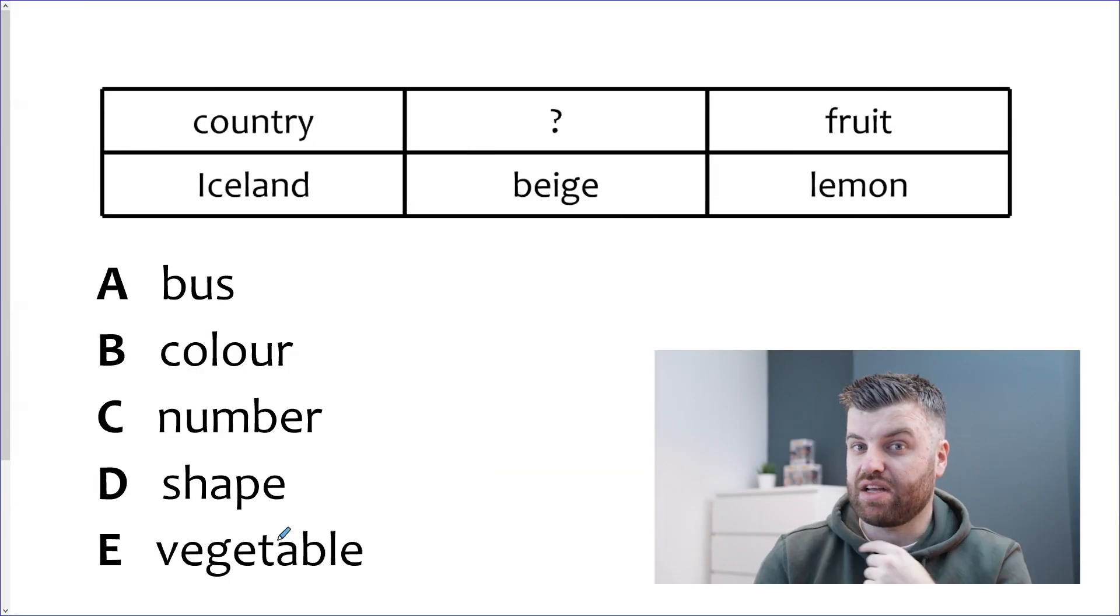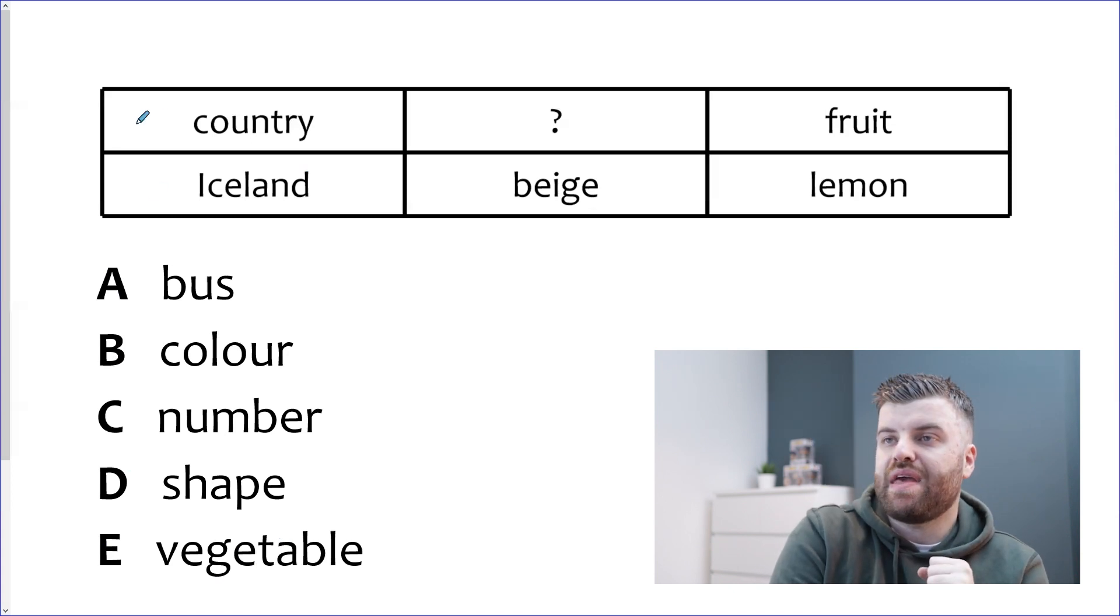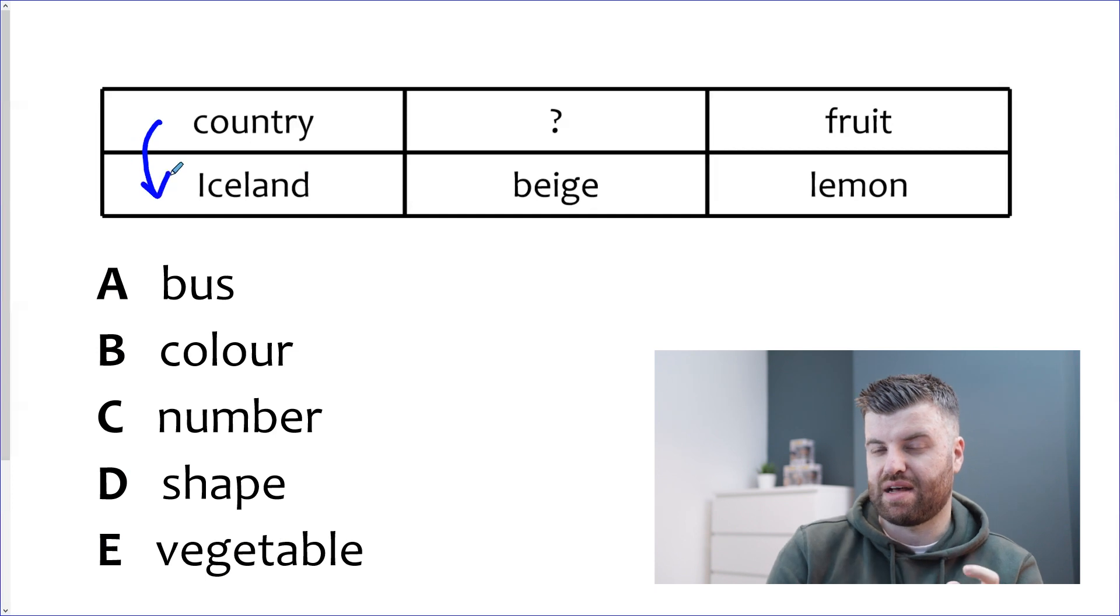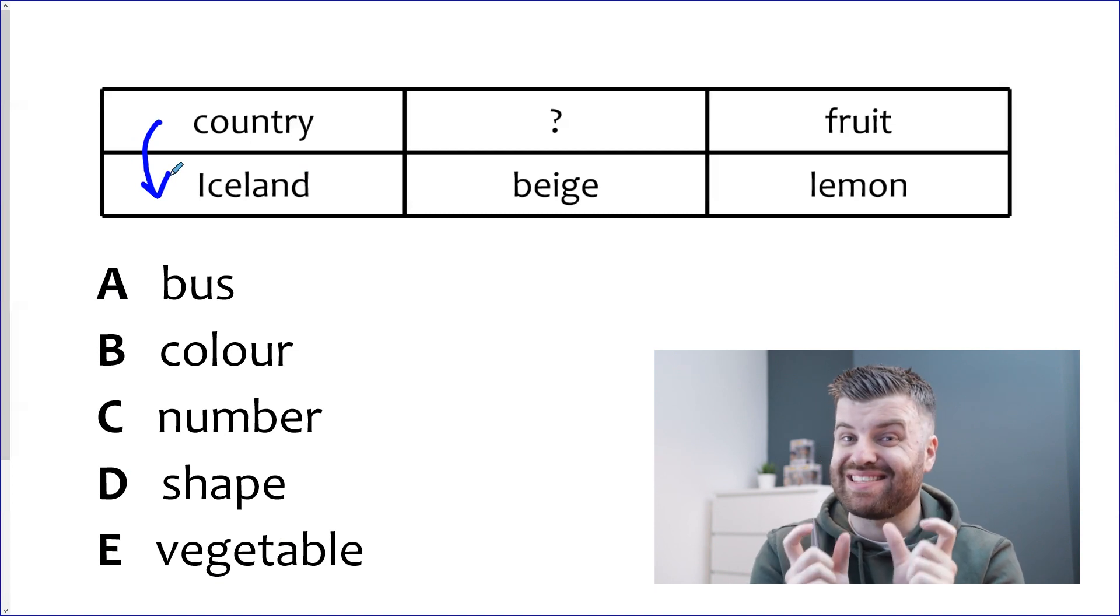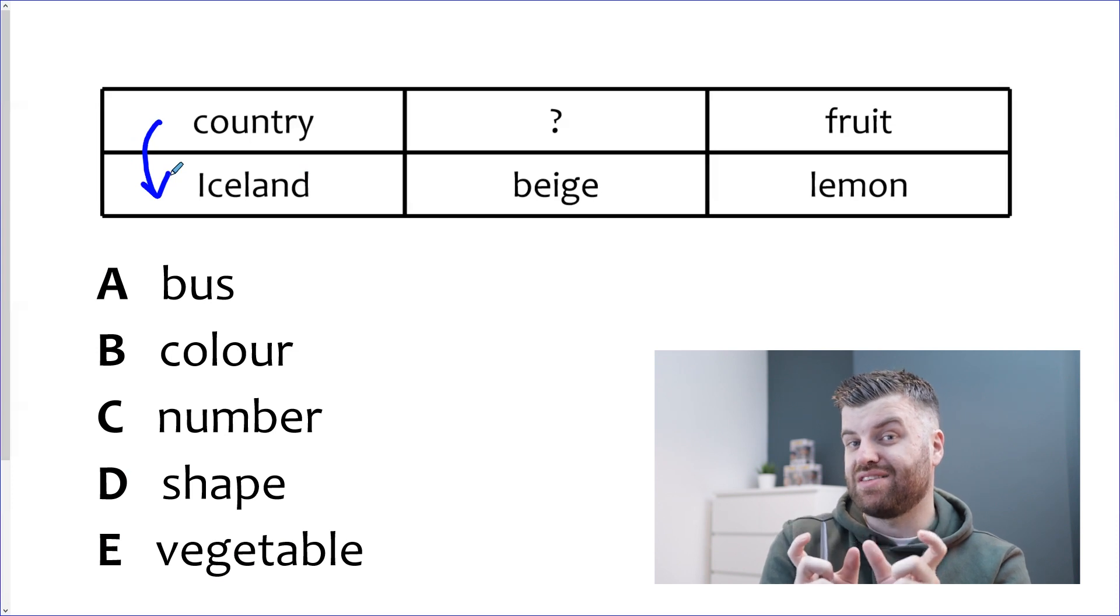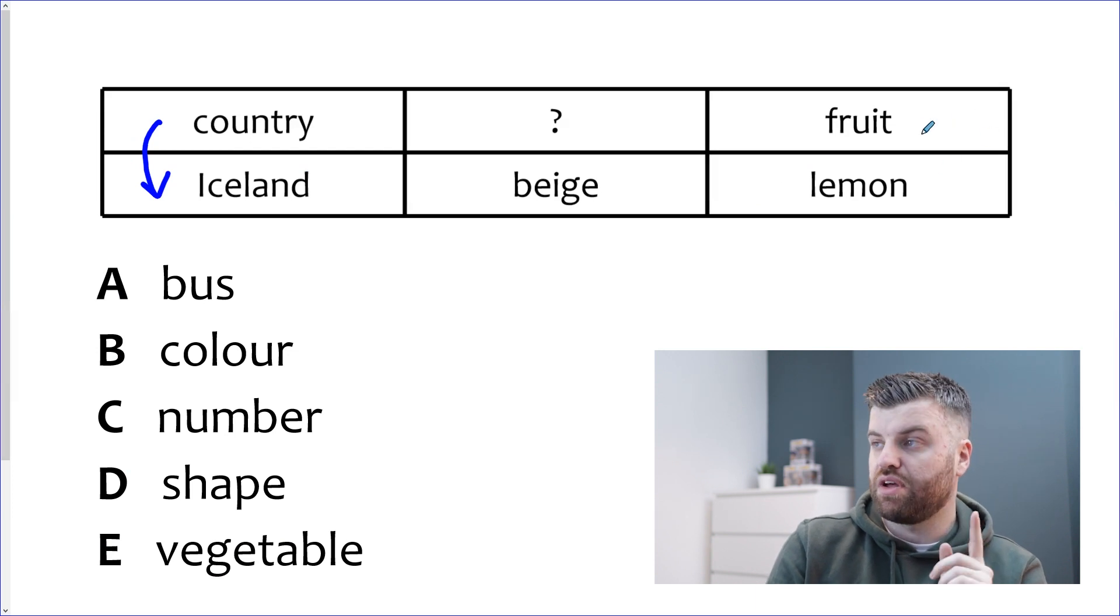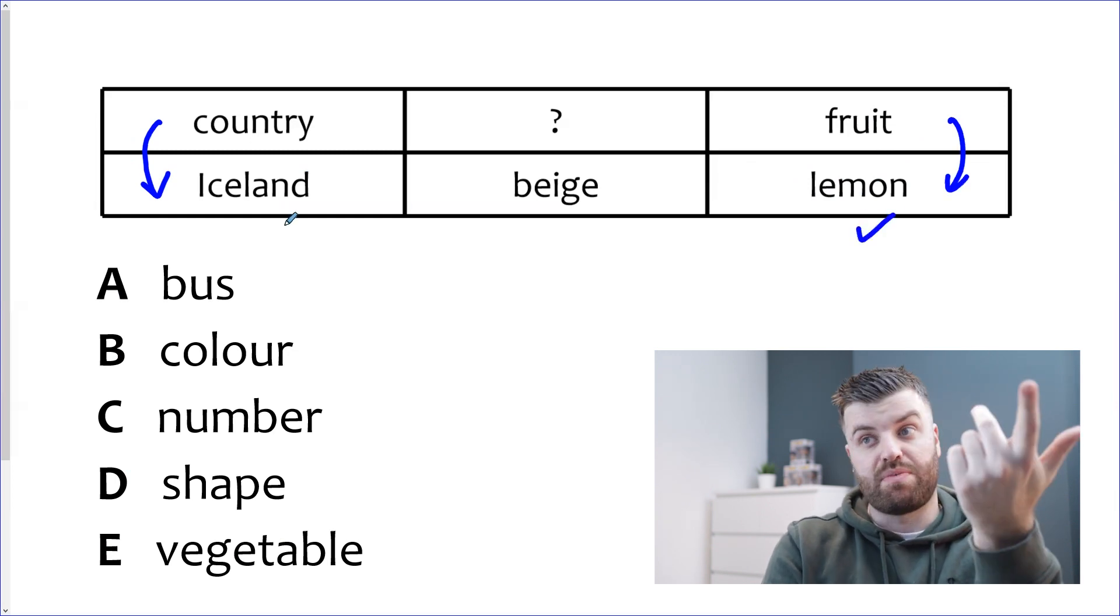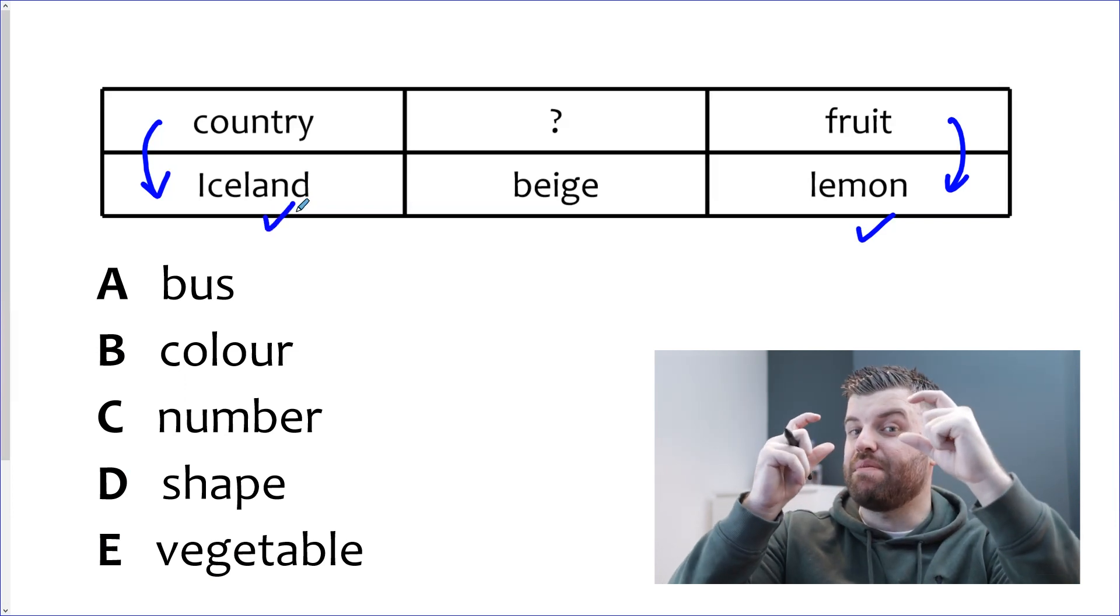Right, diving into another question. Let's take a look and this time I'm going to go straight into my columns to try and find a link. So we have here country. Is it linked to Iceland somehow? Well, Iceland is a type of country and it's a really good technique to try and build a sentence that works like that because if it is a link for the whole grid you should be able to use that sentence interchangeably across the different columns. So let's take a look at the other full column which is the last one fruit and lemon. So can we say that lemon is a type of fruit? Yes. We can say that Iceland is a type of country. Yes. So we're going to start with the bottom word and the link is that it fits into the category above.